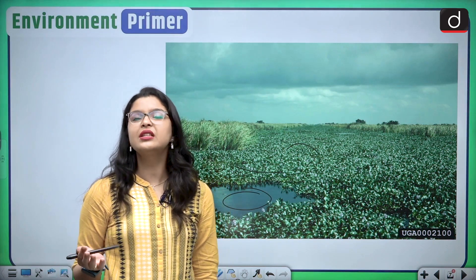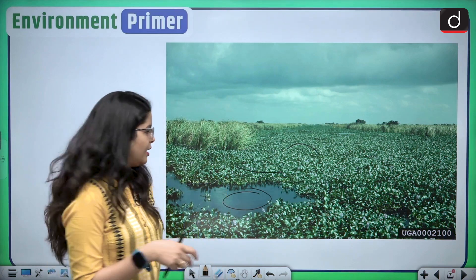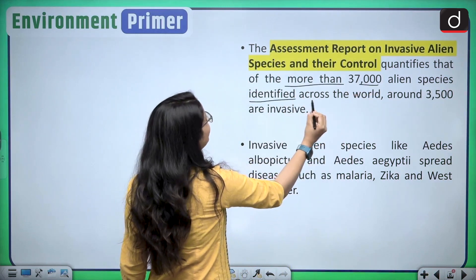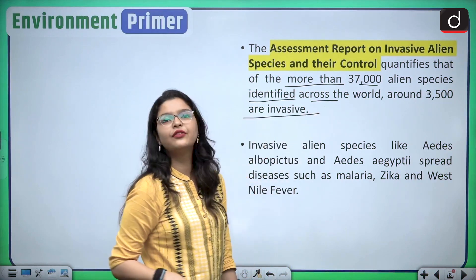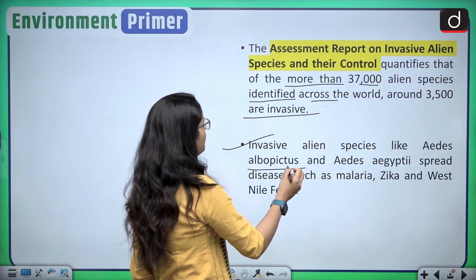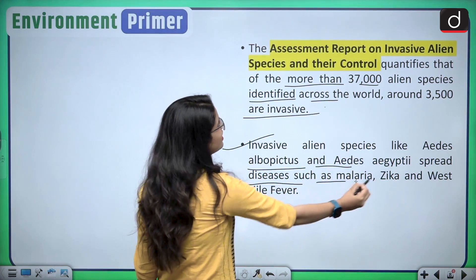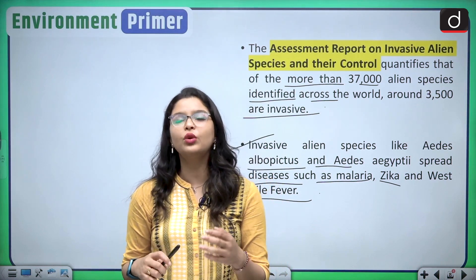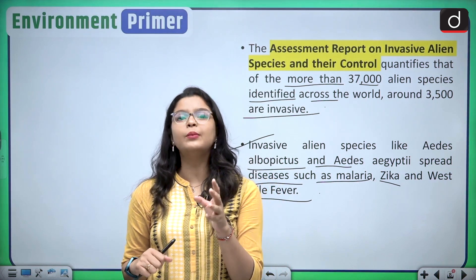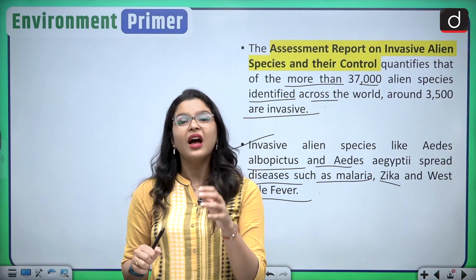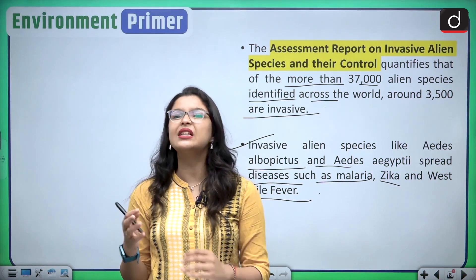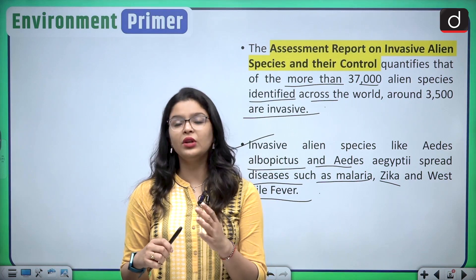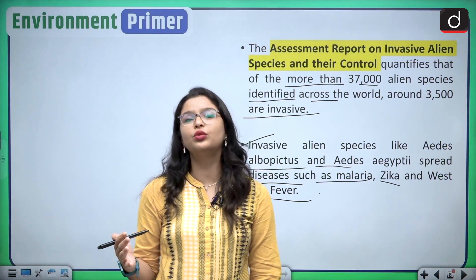These invasive alien species are a threat to global biodiversity. The report states that of more than 37,000 alien species identified across the world, around 3,500 are invasive. Invasive alien species like Aedes albopictus and Aedes aegypti spread diseases such as malaria, Zika, and West Nile fever. They are responsible to some extent for causing these new diseases in humans, making them not only a threat to global biodiversity but also a big threat to the human population.